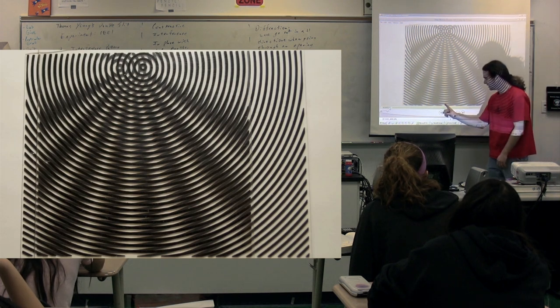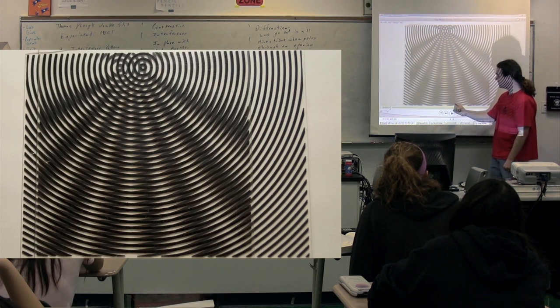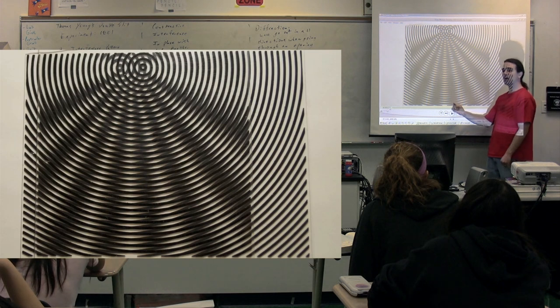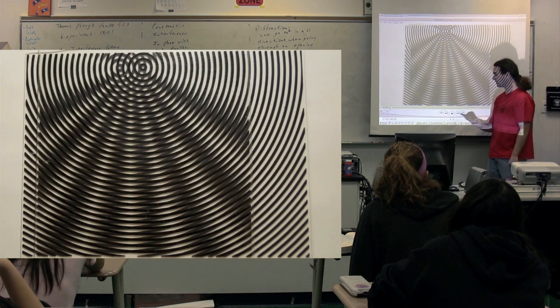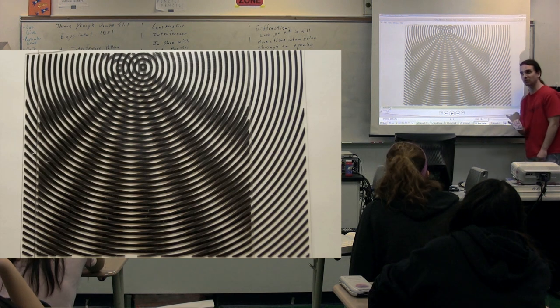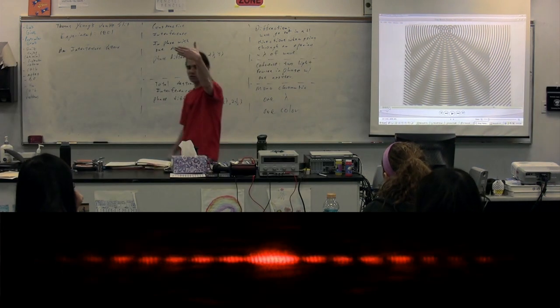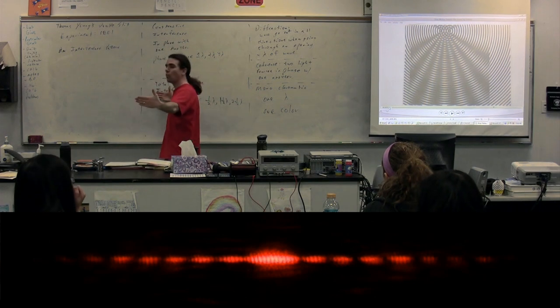And what this is is what you see here is constructive interference where these wavelengths overlap and destructive interference where the wavelengths are phase shifted by half a wavelength. So constructive interference, destructive interference, constructive, destructive, constructive interference. Right? That's what is happening to the light as it goes from the double slit to the wall.